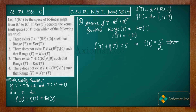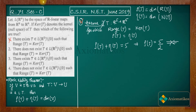Option 2 states that there does not exist T belonging to L(R⁵) minus {0} such that their range and kernel are the same. This is exactly what we have just proved, so option 2 is the correct option. Let us mark option 2 as correct.